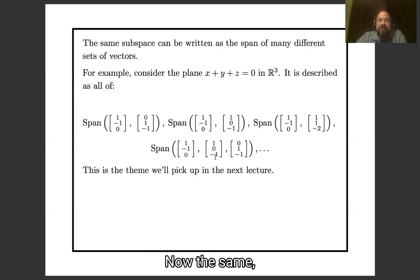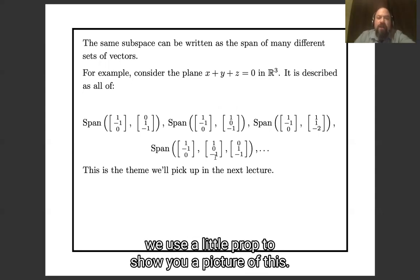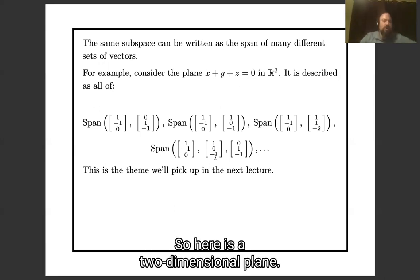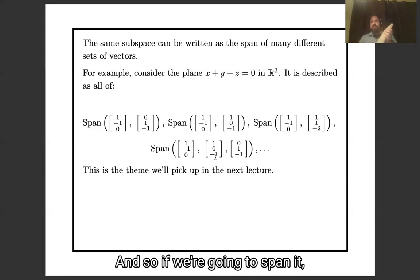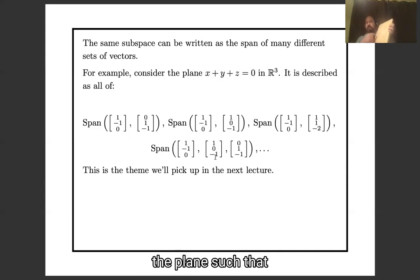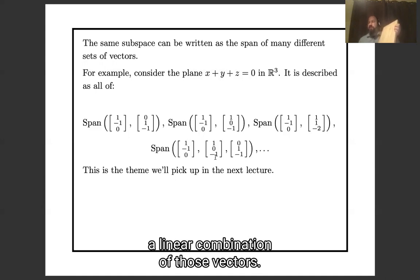Now, let me use a little prop to show you a picture of this. So here is a two-dimensional plane. And so if we are going to span it, that means we're going to give a bunch of vectors on the plane, such that every vector on the plane is a linear combination of those vectors.